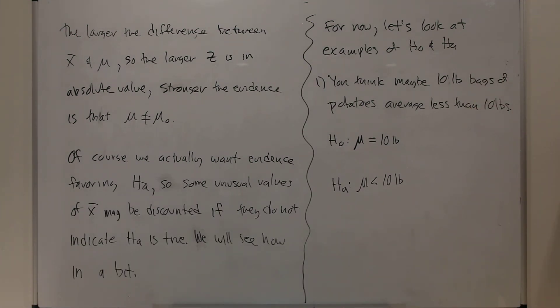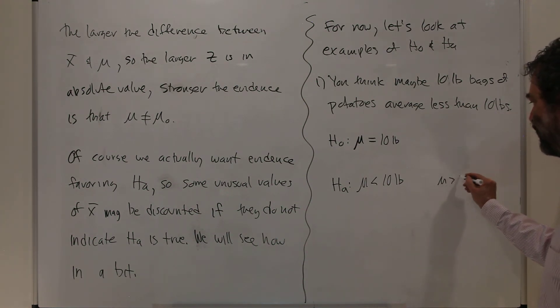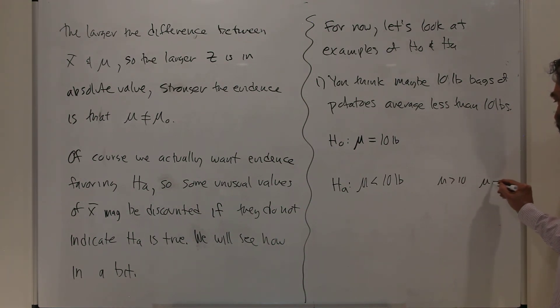So we said there's three kinds of alternatives you might use. The other ones look like mu is greater than 10 pounds. And the third one is mu is not equal to 10 pounds. Those would be the possibilities for alternatives depending on what you're trying to detect.